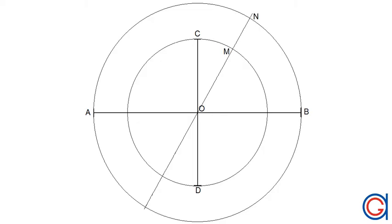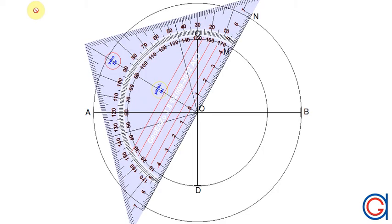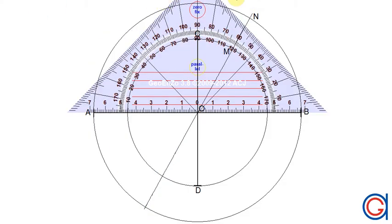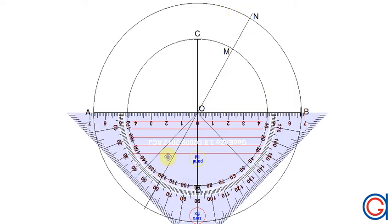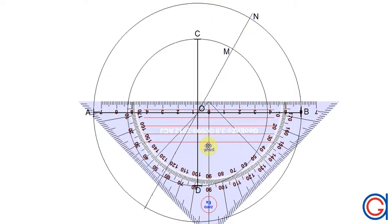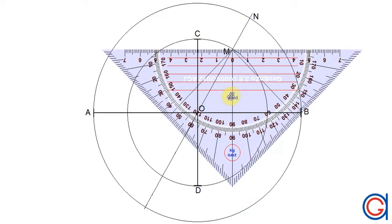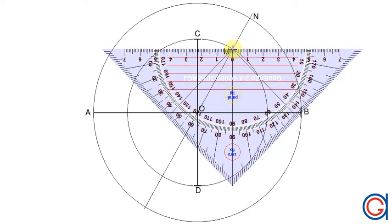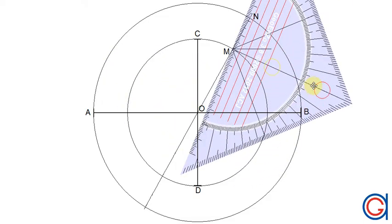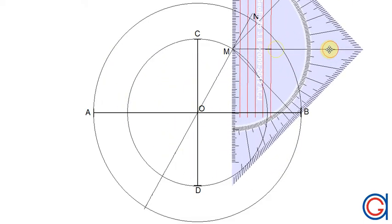Now where it cuts the outer circles, we will call these points M and N. So the next step, using your set square, we're going to draw a horizontal line from the point M to the right. And now we're going to draw a vertical line from point M until it cuts the horizontal line that we've just drawn at a new point.